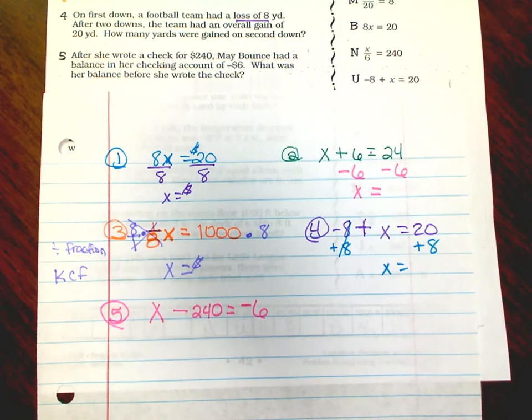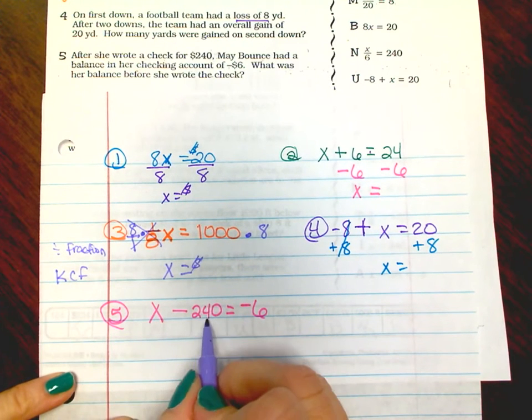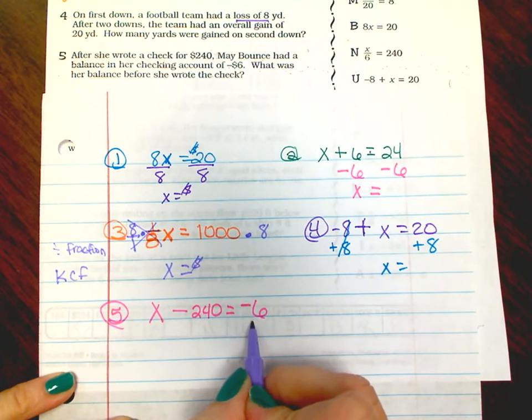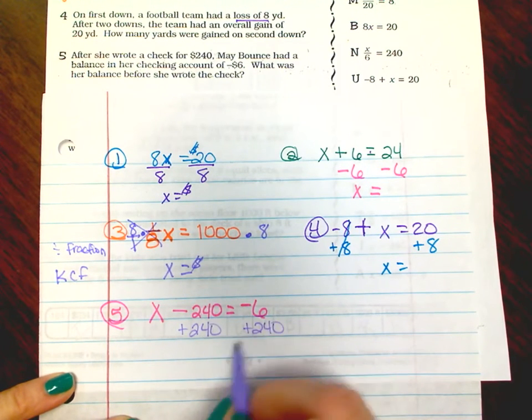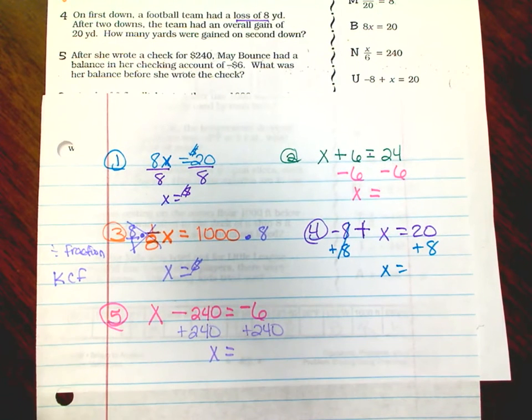So what is that? To solve for X, I need to bring this over to the other side to cancel it out. You're gonna have to add 240 to find out what X is.